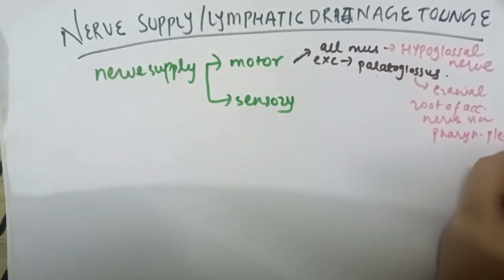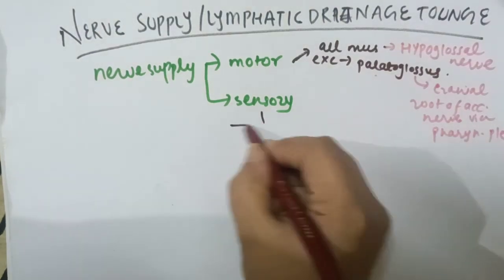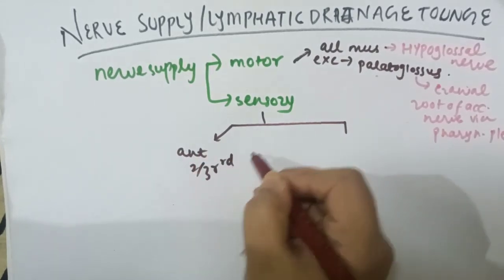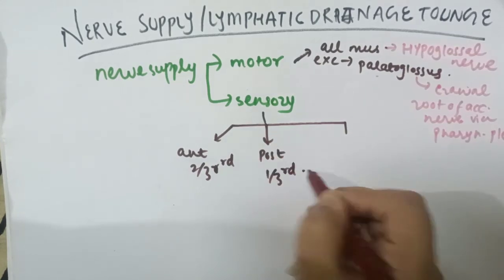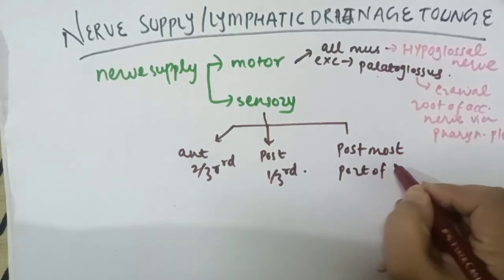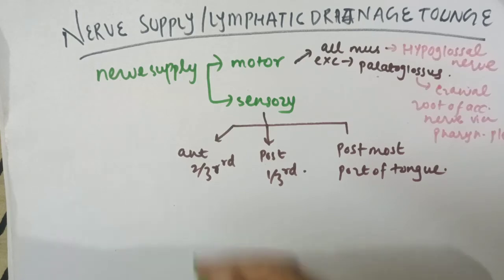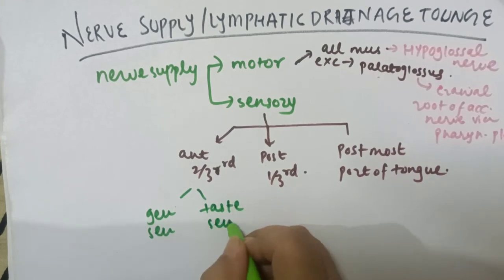Now looking at the sensory supply: in sensory supply we have three divisions — the anterior two-third portion, the posterior one-third portion, and the posterior-most portion of the tongue.